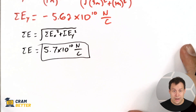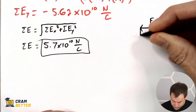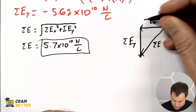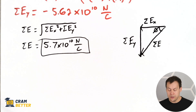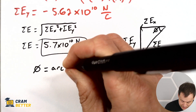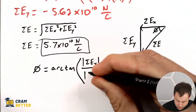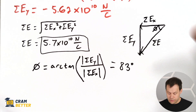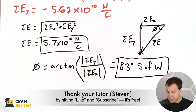We're still not done — we have to find the direction of this field. Let's draw a vector triangle: we have a negative electric field in the x direction and a negative electric field in the y direction, giving us our total electric field vector. We want the angle, which I'll call phi. Phi equals arctan of the absolute value of E_y over E_x, which comes out to 83 degrees. Looking at our picture, if we point to the west and go 83 degrees south of there, we hit our vector — so it's south of west, or 83 degrees below the negative x axis.